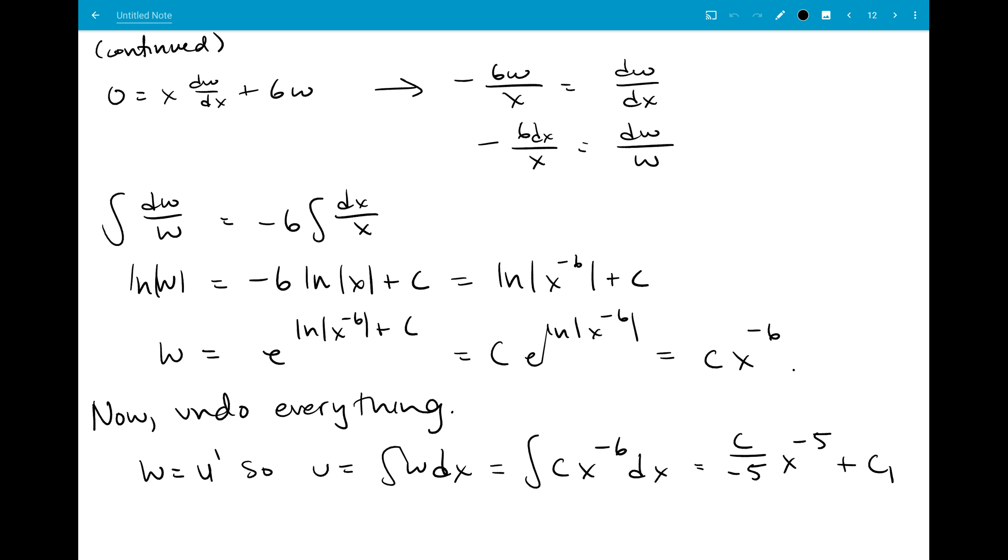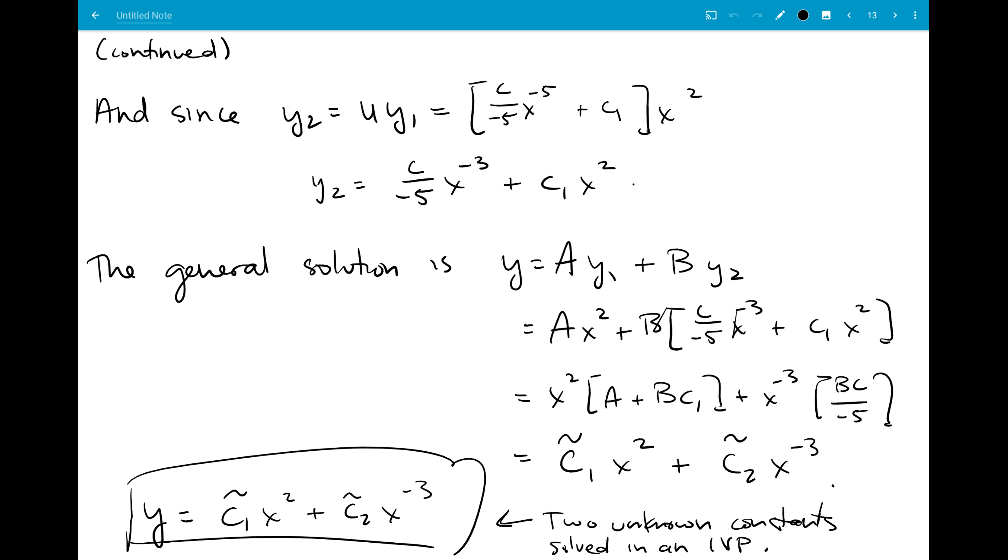Got us to solving our reduced equation, which was hopefully more concrete this time around. It was just a simple separable equation where we knew what w was pretty easily. And then we had to undo by integrating w to find u, then plugging in to find y2. And again, I did that thing where I held on to unnecessary constants, and then just remembered to reduce it all to having only two constants at the end.